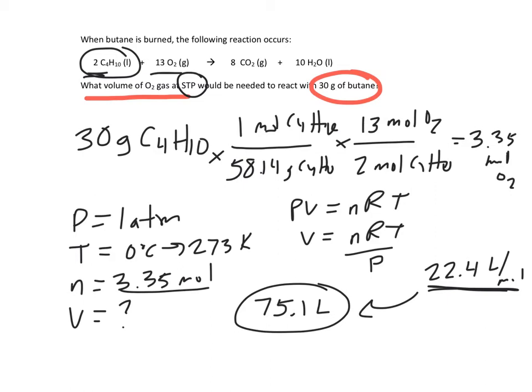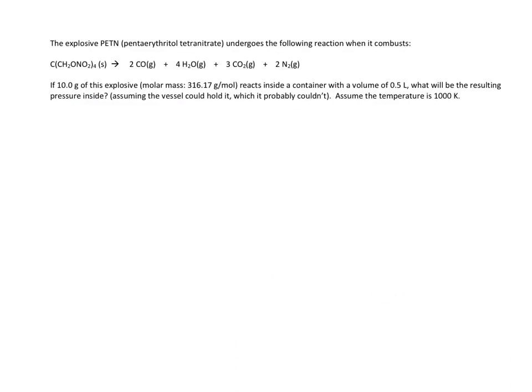But let's just do one more. All right, so here we have an explosive, PENTA - I'm not even going to try it. But anyway, we have this explosive, and it's 10 grams, and when it explodes it produces all these gases. And that pressure from the gas is what makes this explosion work. So we have a container with a volume of 0.5 liters. We know the temperature is going to be about 1,000 Kelvin, and we want to find the pressure inside.